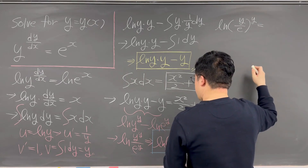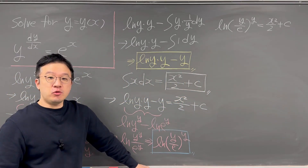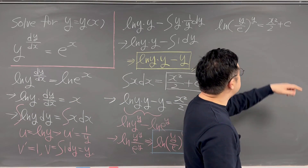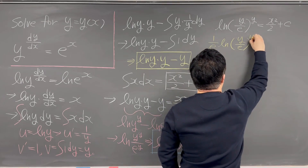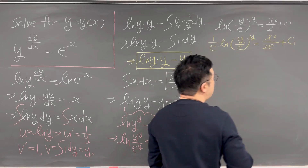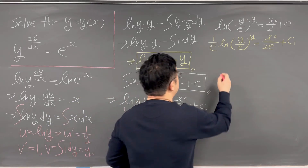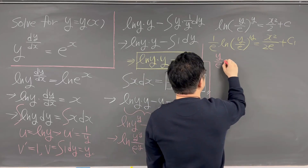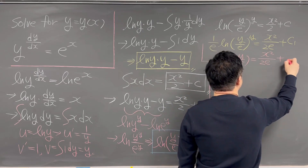Now, to prepare for the Lambert W function, I'll multiply both sides by 1/e. The left-hand side becomes (1/e) times ln(y/e^y), which equals x²/(2e) plus a new constant c1. We can rewrite this as (y/e) times ln(y/e), still equal to x²/(2e) plus c1.